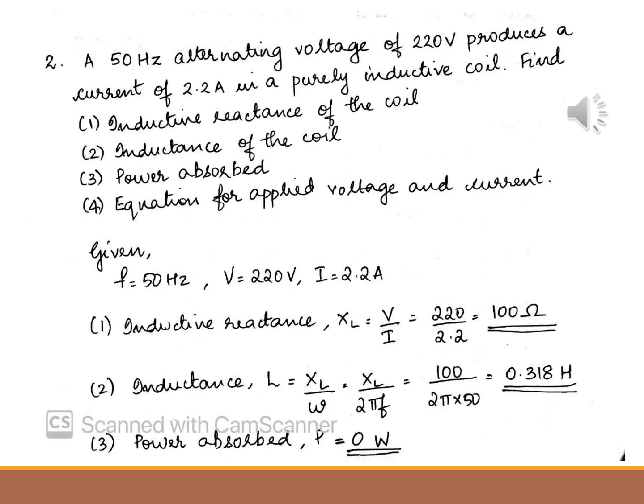Second question: a 50 hertz alternating voltage of 220 volts produces a current of 2.2 amperes in a purely inductive coil. Find the inductive reactance of the coil, inductance of the coil, power absorbed, and the equation for applied voltage and current. The given data are: frequency is 50 hertz, Vrms is 220 volts, and Irms is 2.2 amperes. The inductive reactance XL equals V divided by I, giving 100 ohms.